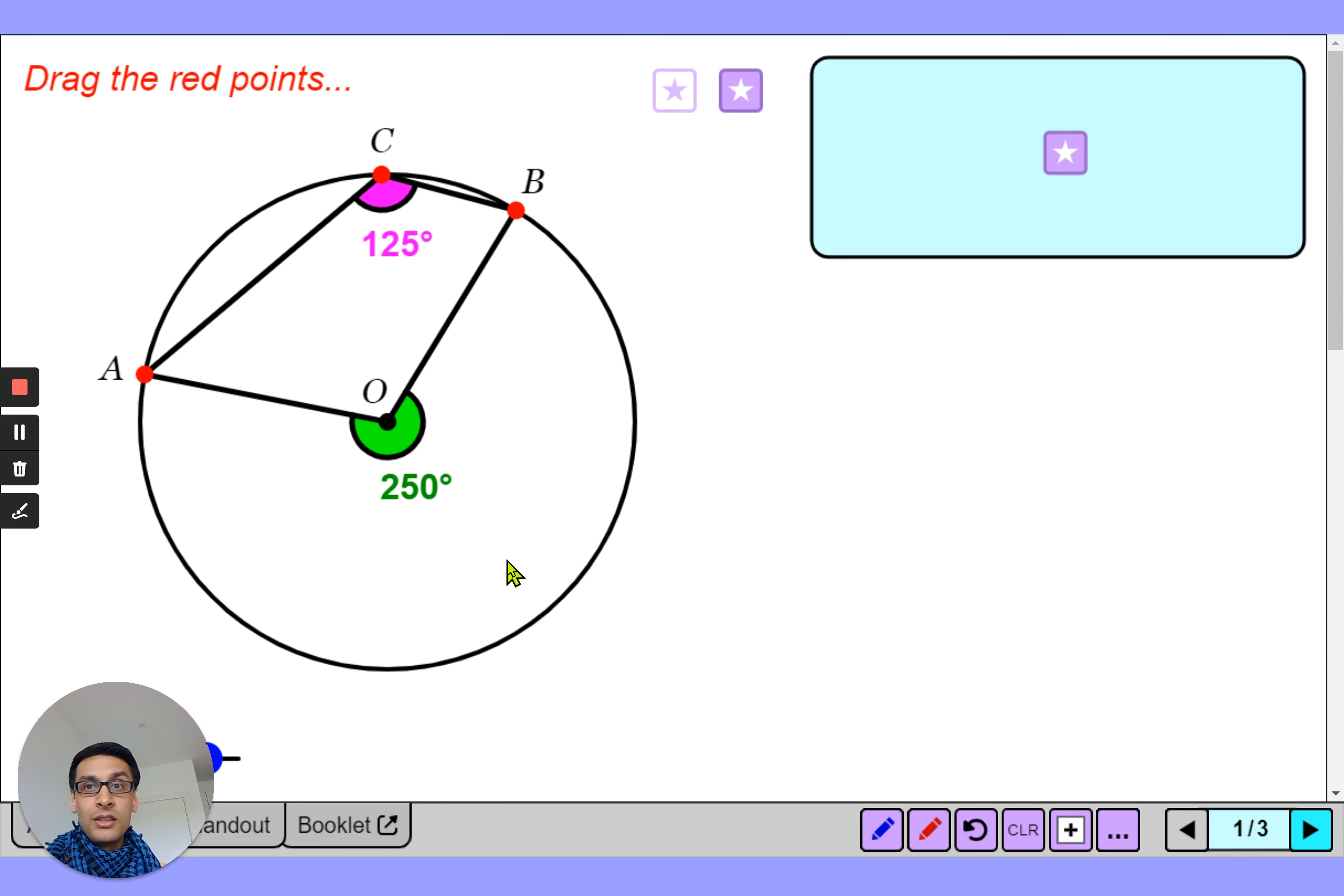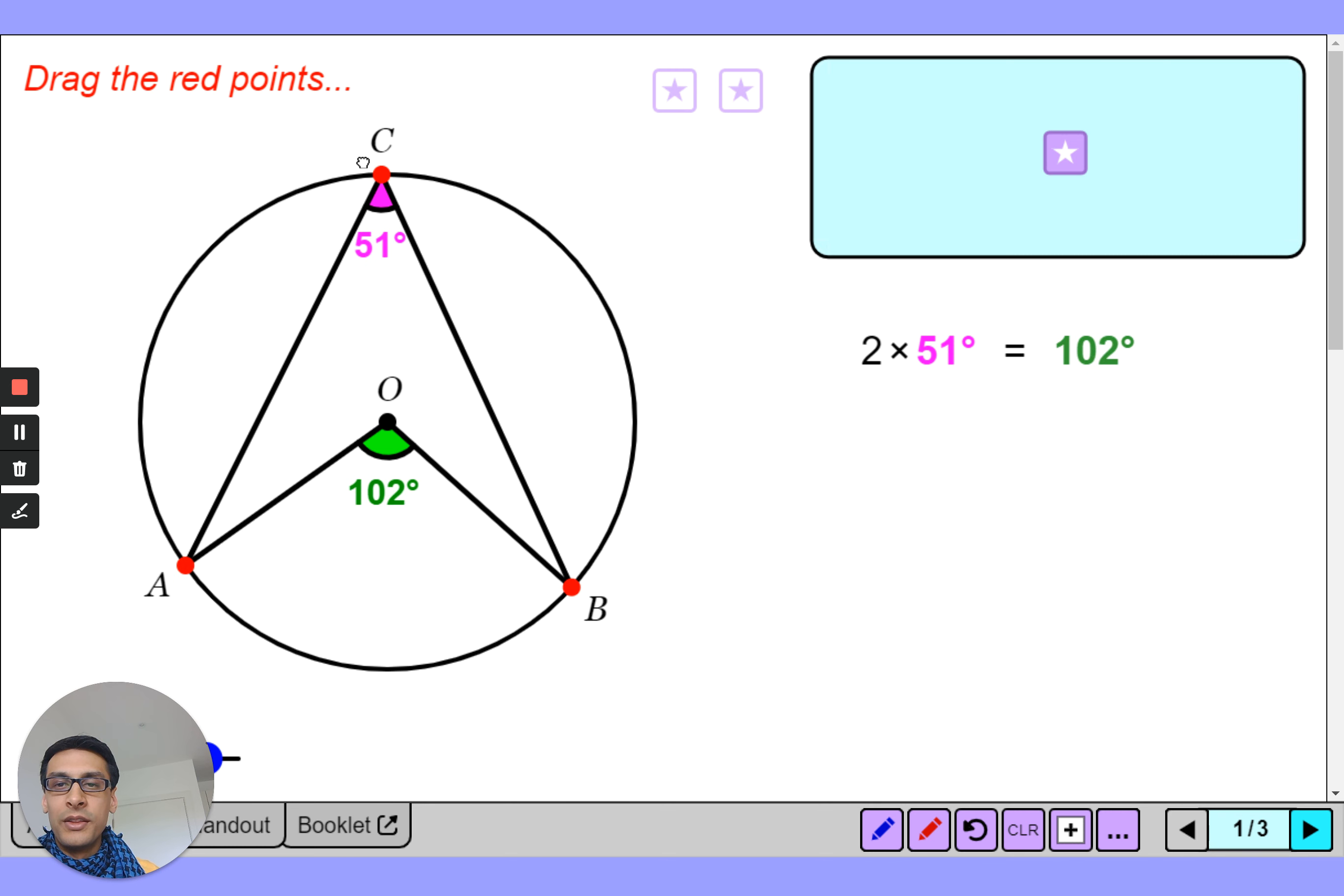So what you may have noticed is the angle at the center is twice the angle at the circumference no matter what I do with this, wherever I move it around.